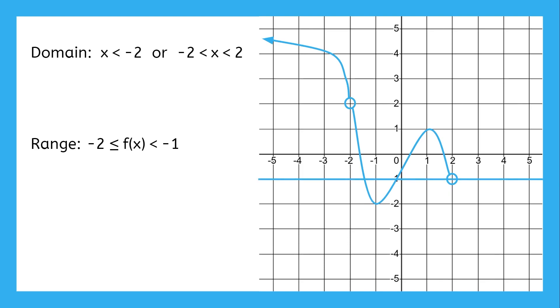While there is one missing point, there are still two other points with that output, which means it's included in the range. So what's really the first section of the range?